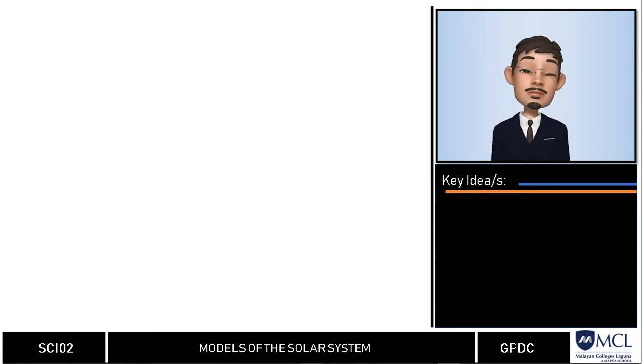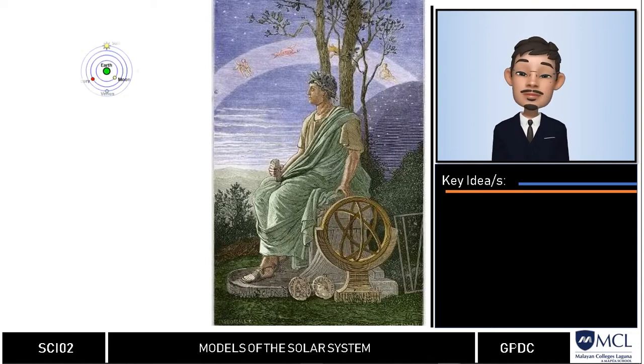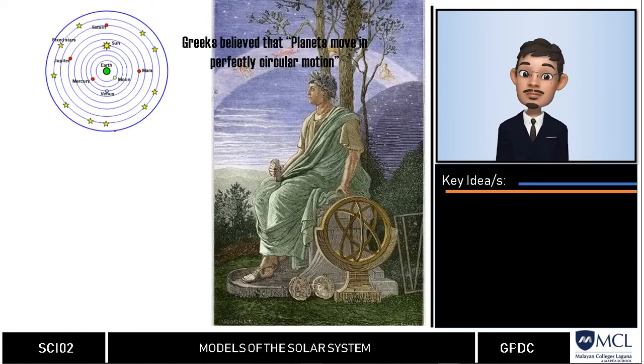Greek philosophers were able to construct patterns of planetary motion based merely on their observations. They said that the planets in the universe are moving in perfectly circular motion.